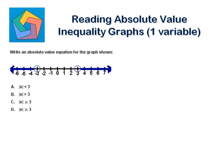We can see a number line here. There is an open circle at x equals 3 and the graph is showing towards the right. An open circle at negative 3 and the graph is showing towards the left. This means x is greater than 3 here, and x is less than negative 3 here.